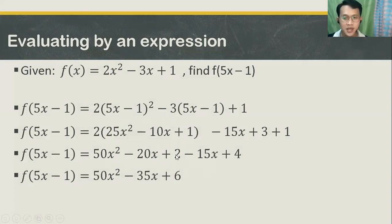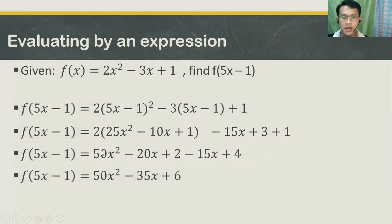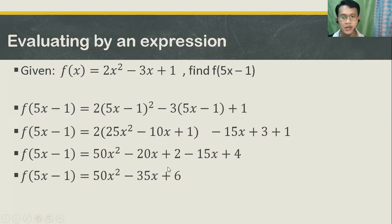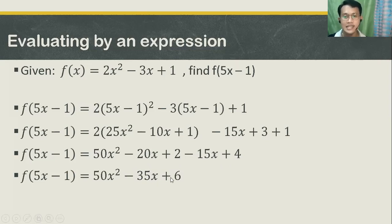2 times 1, you get positive 2 — that's correct. Then bring down negative 15x. 3 plus 1, that is 4. Combine like terms. Check the terms with variable x with exponent 2 — only one, so bring down 50x squared. We have negative 20x and negative 15x — they are similar terms, so combine them: negative 20x minus 15x equals negative 35x, because 20 plus 15 is 35. Copy the x. Then 2 plus 4, you get 6. Therefore, our f of the quantity 5x minus 1 is equal to 50x squared minus 35x plus 6.